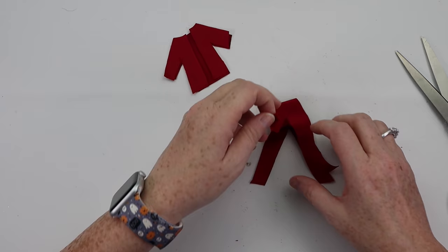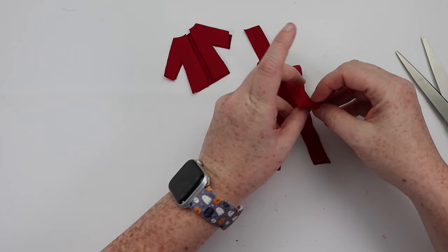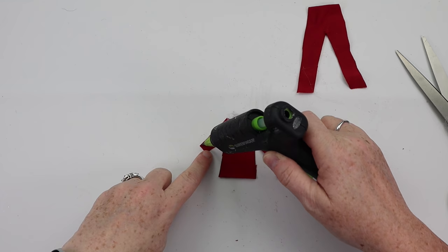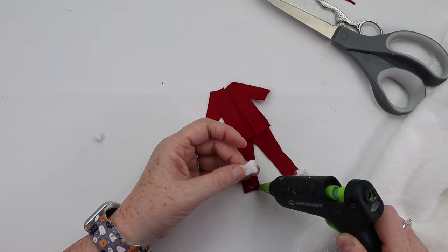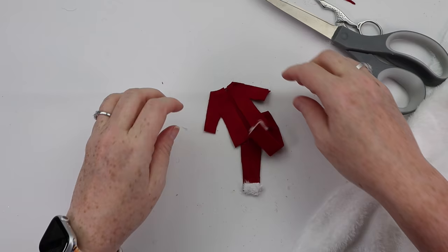With all the pieces of the suit cut out, I grabbed my hot glue gun and glued the two pieces of pants together and I glued the two pieces of the jacket, leaving a little bit of a gap in the front. With some white fluffy fabric, I cut small little rectangles and hot glued those to the bottom of the pants, the bottom portion of the sleeve of the jacket, as well as the very front middle section of the jacket.